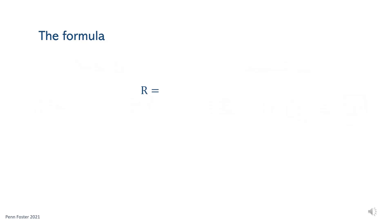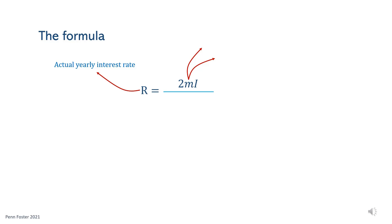R is the unknown, which is the actual yearly interest rate. On the numerator goes 2 times M times I. M basically reflects the frequency of payments. If payments are made monthly, then M equals 12 because there are 12 months in a year. If payments are weekly, then M equals 52 since a year has 52 weeks.